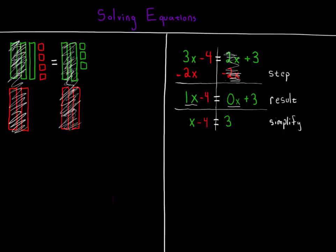The last step is to get x all alone. Since there are negative 4 units on the left side with the x, we need to cancel those negative 4 units out. And we'll do so by adding the opposite, positive 4, to both sides of the equation.